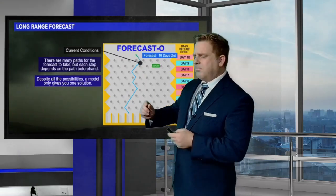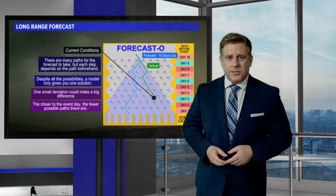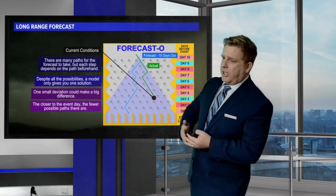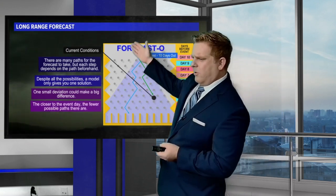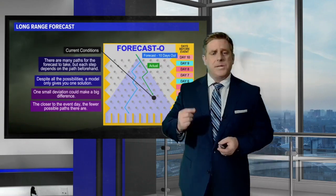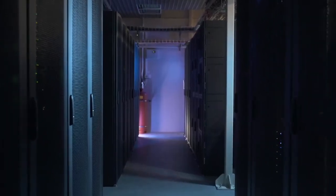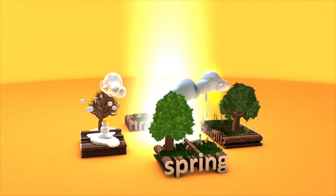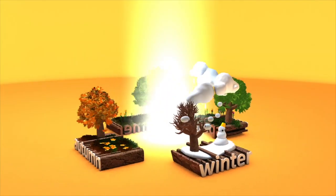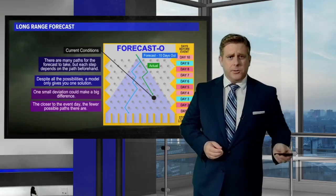But if the guidance is slightly different as far as those computer models are concerned, or the data is slightly different, it can change up the long-range forecast. Remember, each one of the computer models have different variabilities in them. For example, the Canadian model is good with snow, while the GFS is good with mid-latitudes, and the European is typically better with tropical systems.